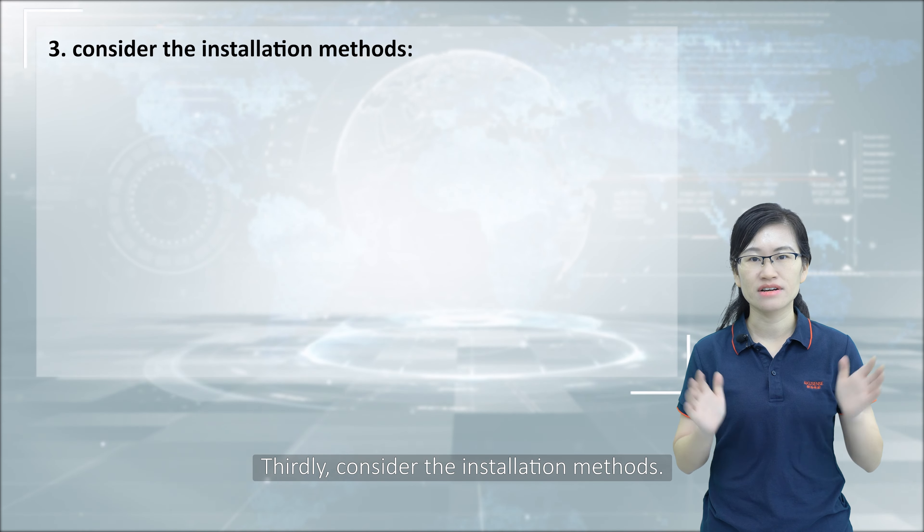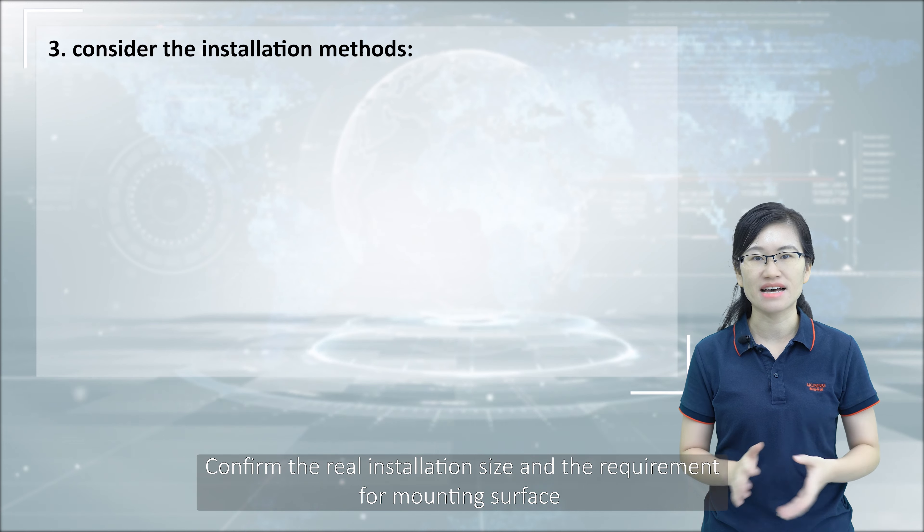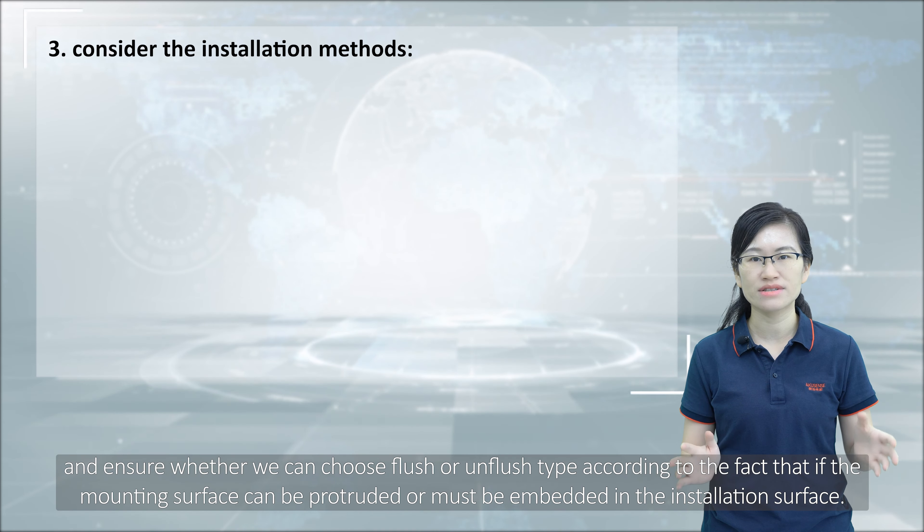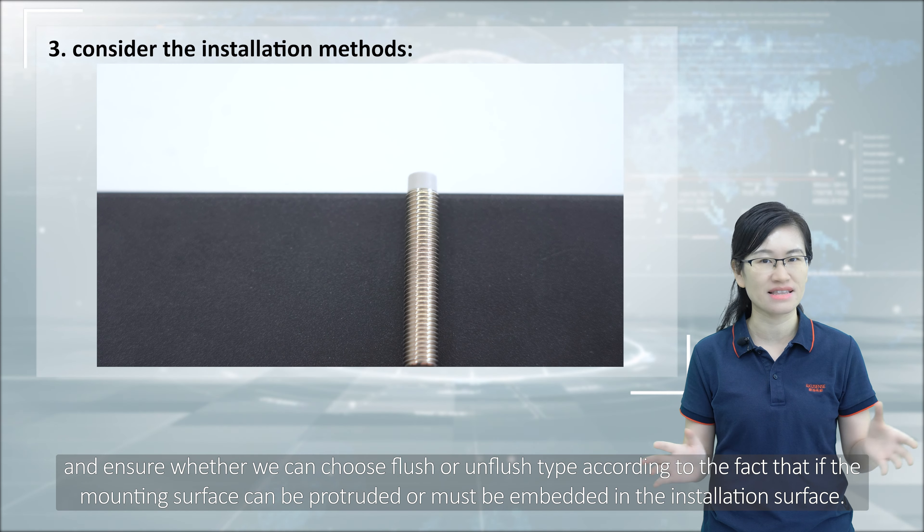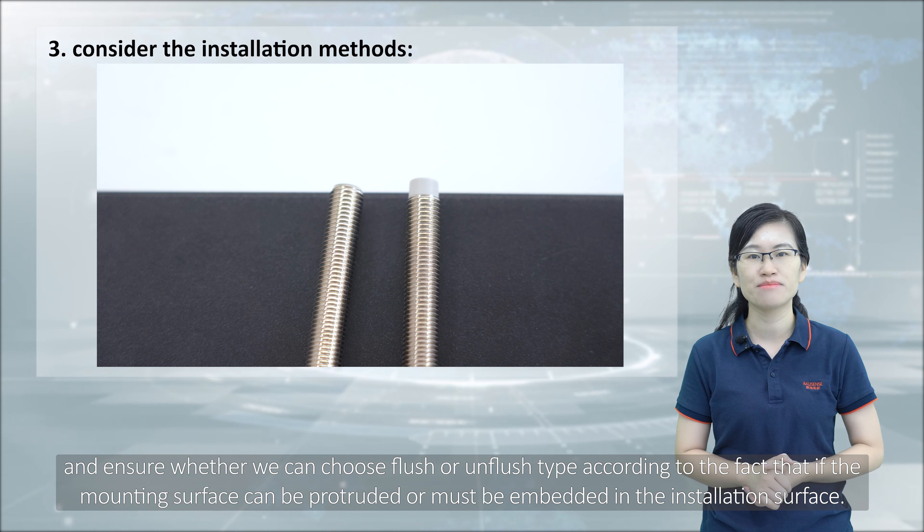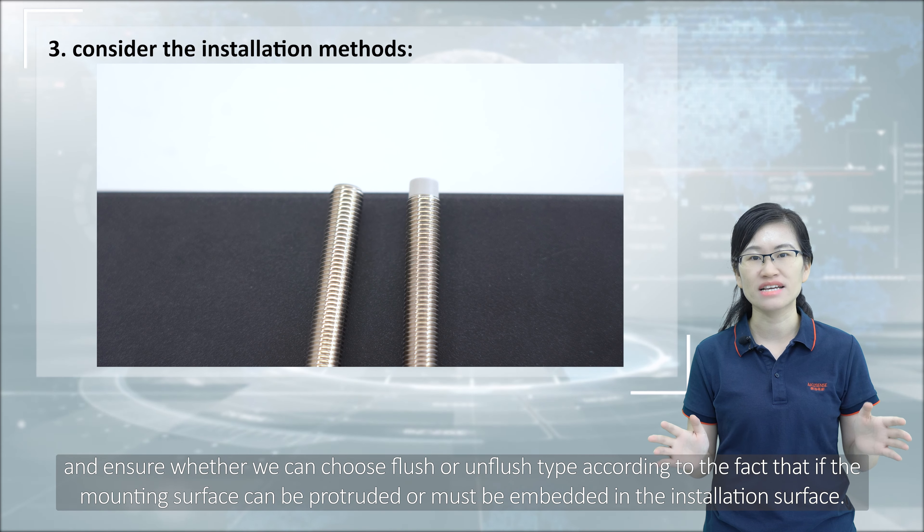Thirdly, consider the installation methods. Confirm the actual installation size and the requirement for mounting surface and ensure whether we can choose the flush or unflush type according to the fact that if the mounting surface can protrude or must be embedded in the installation surface.